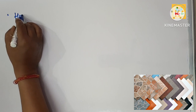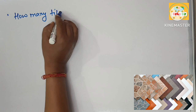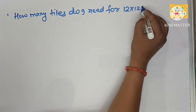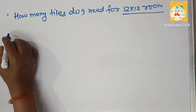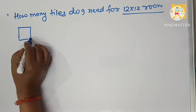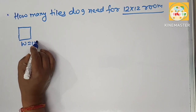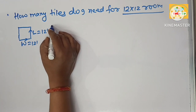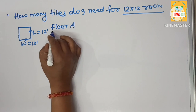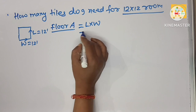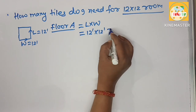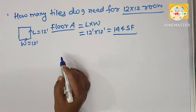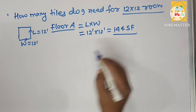In this video we learn about how many tiles are needed for a 12 by 12 room. The room dimensions are: width is 12 foot and length is also 12 foot. First, calculate the floor area of this room — length multiplied by width, that's 12 foot multiplied by 12 foot, which comes to 144 square feet. Now we need to find out how many tiles are required to cover that area.